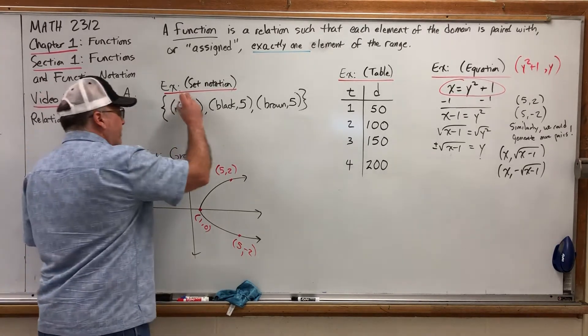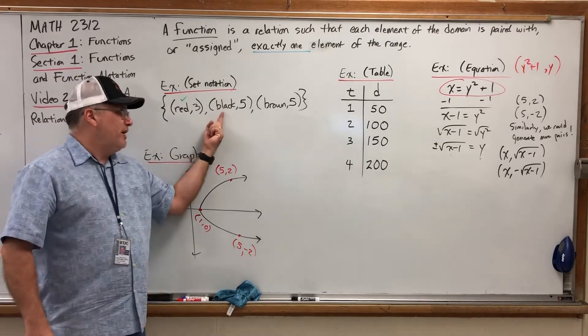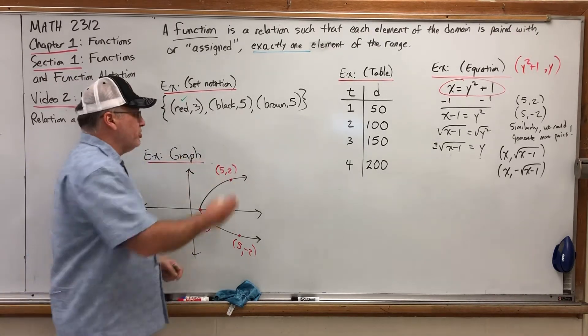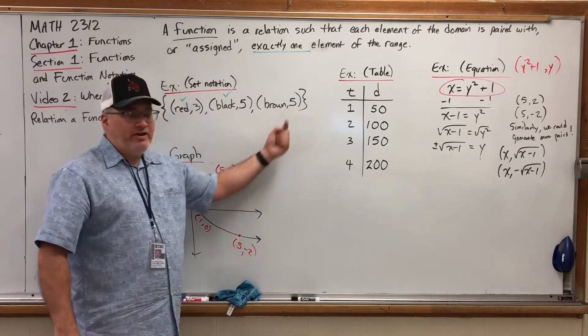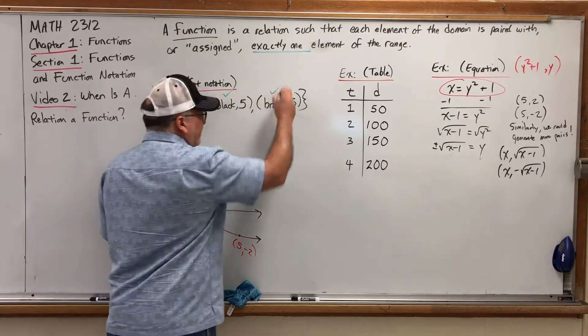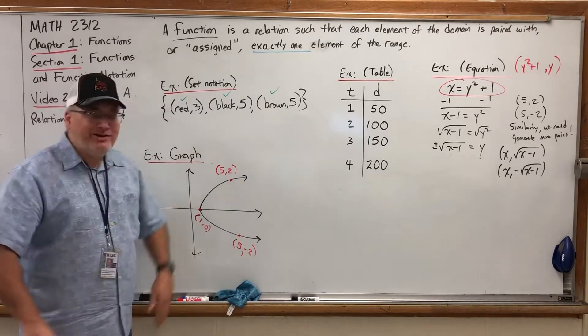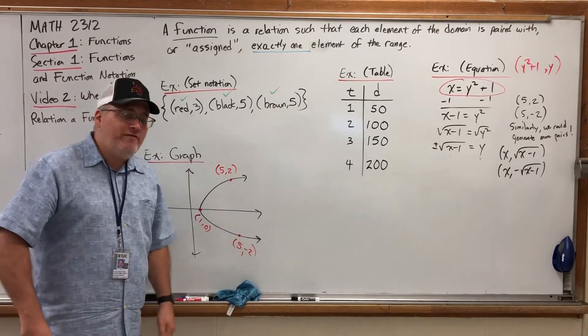Starting with red, how many values is red paired with? Just this value. It's okay. Black, similarly, is paired with just one value. It's okay. And brown, similarly, is paired with just one value. It's okay. Since each element of the domain passes the criteria, it's paired with exactly one value.